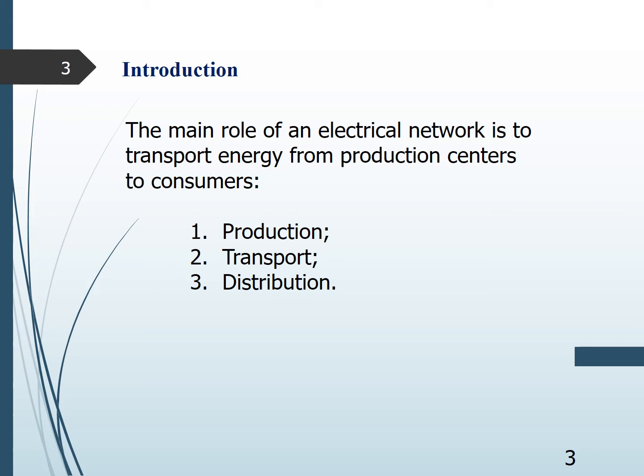The main role of an electrical network is to transport energy from production centers to consumers. This path goes through three phases: production, mostly from large power units; transport of the energy produced with minimization of losses; and distribution, which presents the links between the transport network and the customer.